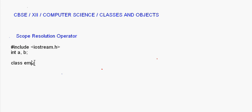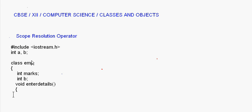After that, I'm going to declare a class and give it the name 'emp'. Inside this class I declare int marks and another variable int b, and a function void enter_details. Inside this function I write marks = 87 and b = 50.